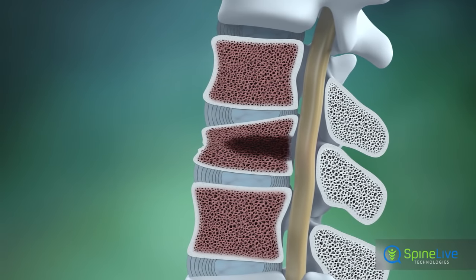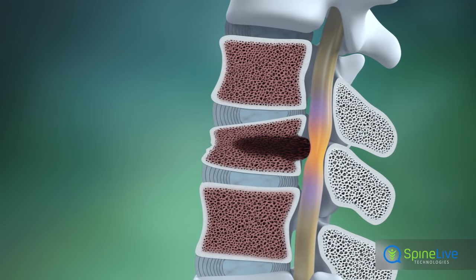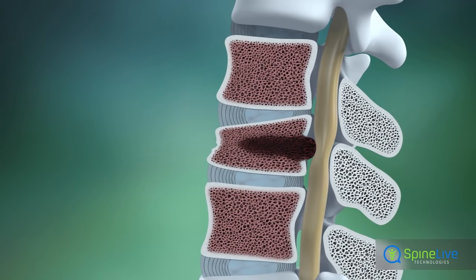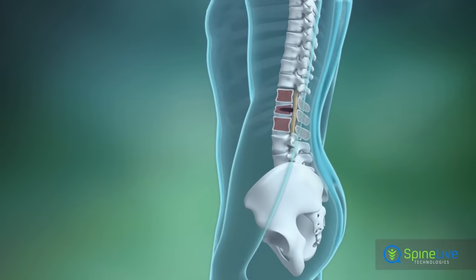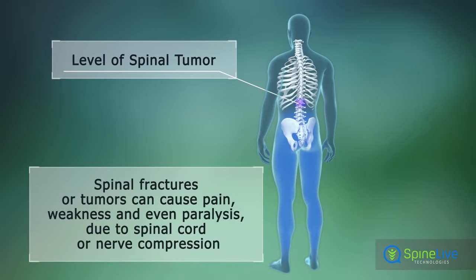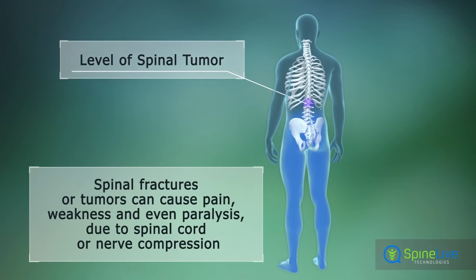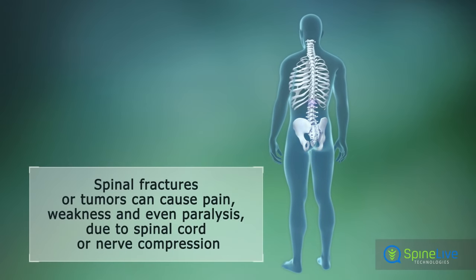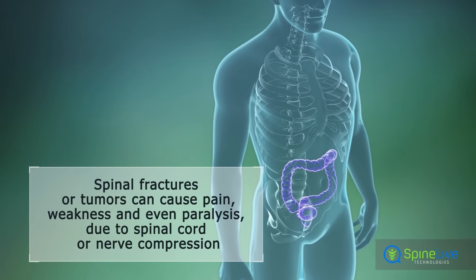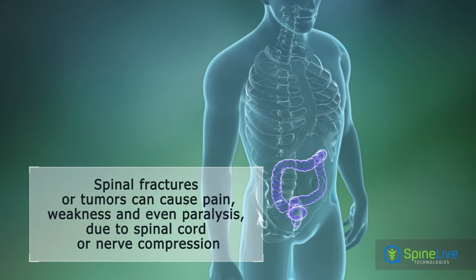The vertebral fractures, as well as the tumors themselves, can compress the spinal cord or spinal nerves, causing pain, numbness, and muscle weakness in the arms or legs, or even paralysis with loss of bowel or bladder control in the portion of the body below the tumor.